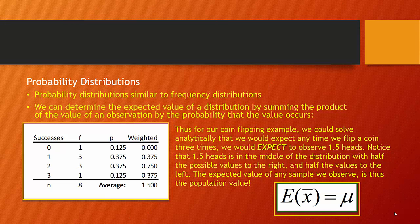I realize you can never actually observe 1.5 heads when you flip a coin three times, but the long-run average of this experiment predicts you should observe 1.5 heads. Notice that half the observations are above the 1.5 point and half are below — that conforms to our understanding of a probability distribution and leads to our understanding of expected value. The expected value of any sample we observe is the population value or the population mean.